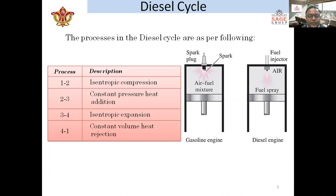Process 3 to 4 is isentropic expansion, which occurs after the combustion process is completed, where expansion takes place as the piston moves from TDC to BDC. Process 4 to 1 is constant volume heat rejection, where gases are exhausted to the atmosphere.